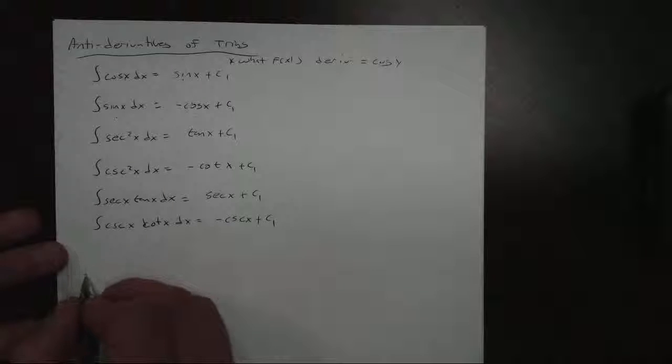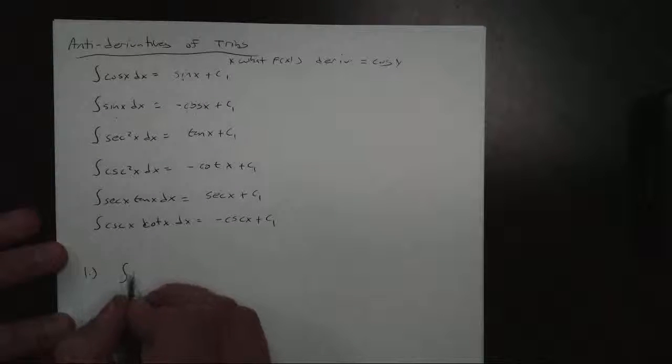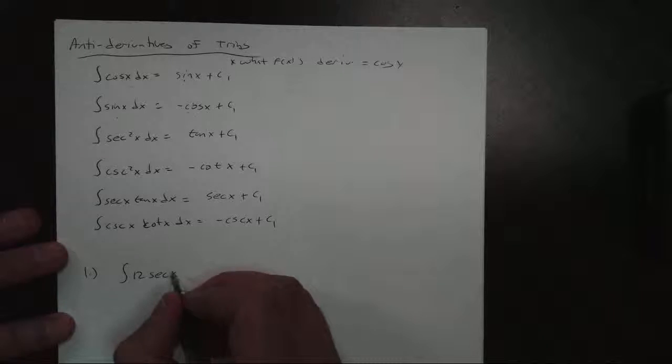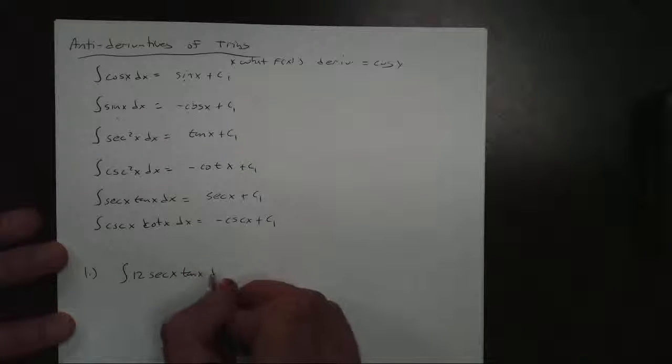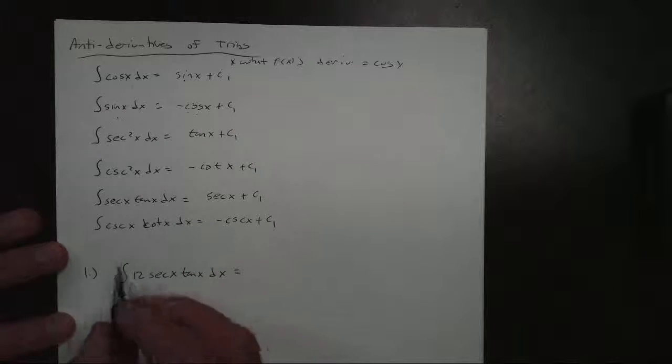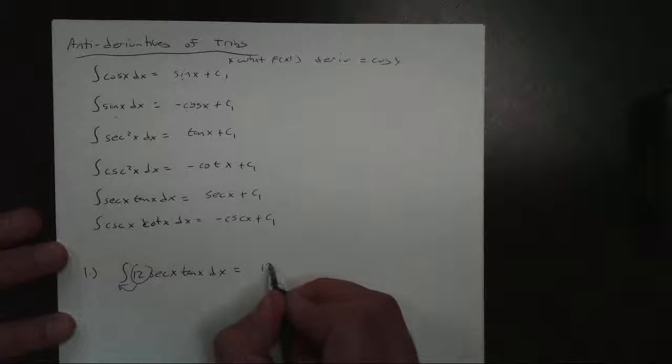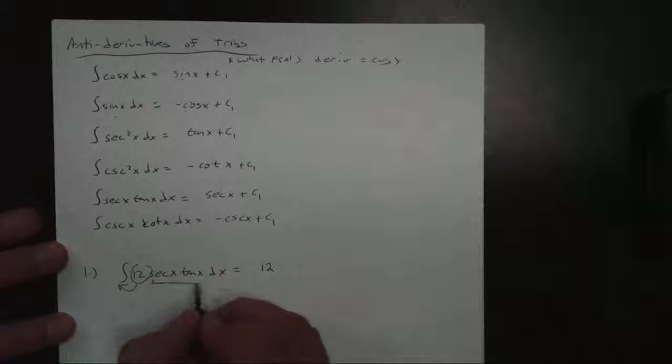So if I want to take a look at an antiderivative of, let's say this, 12 secant x tangent of x dx. Well, the 12 is a constant. I don't worry about that. So I get 12, and I'm looking at only the secant tangent.